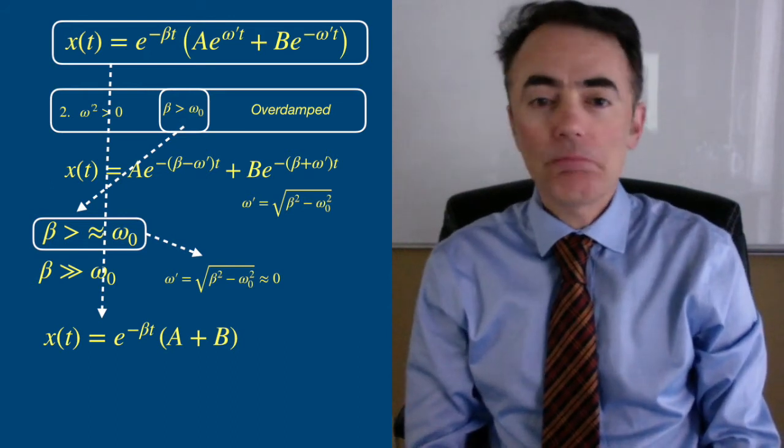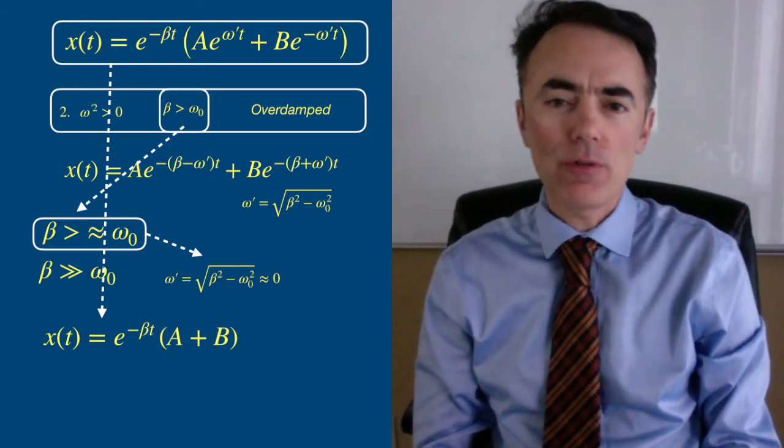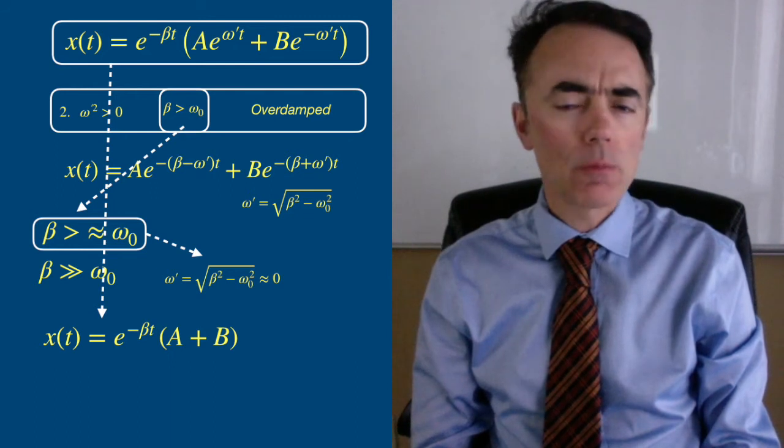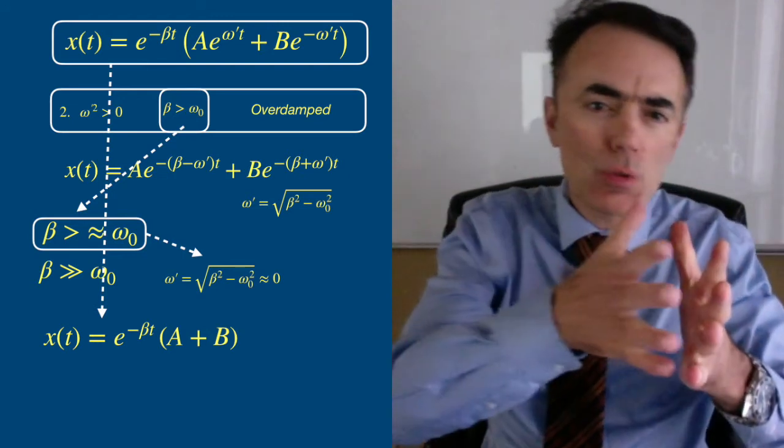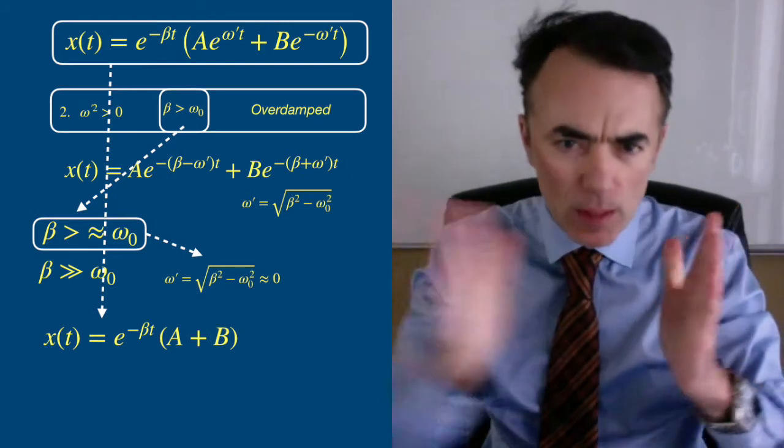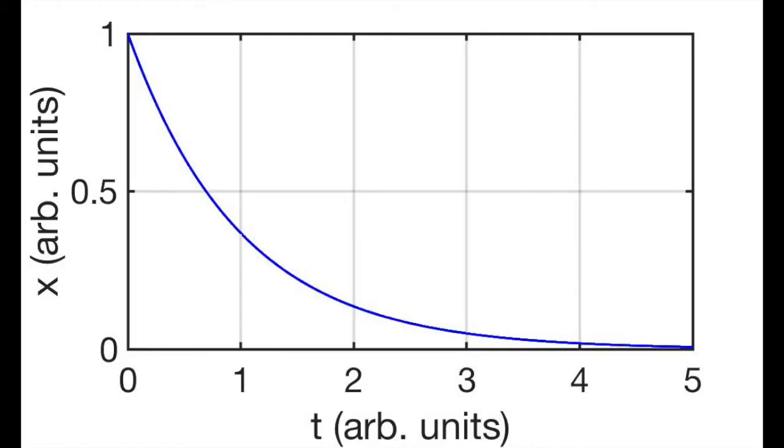And we only have decaying exponential behavior from e to the minus beta. The spring is stretched and released and it just goes to the equilibrium position following this exponential. There is no oscillatory motion in this case.